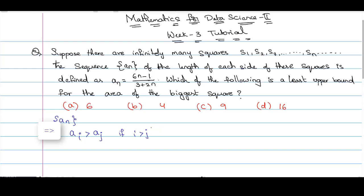Now, since the sequence is increasing, the length of any square is less than the limit of this sequence if it exists. So, if this limit as n tends to infinity an exists, then the length of side of any square will always be less than or equal to this limit value.